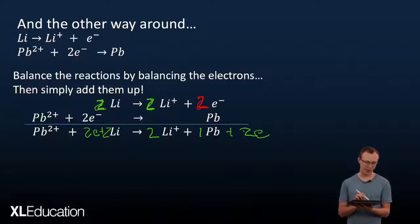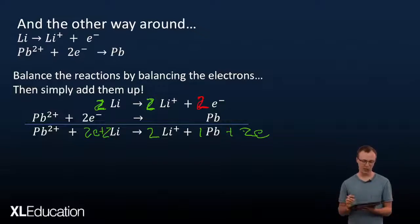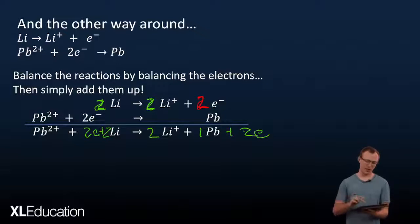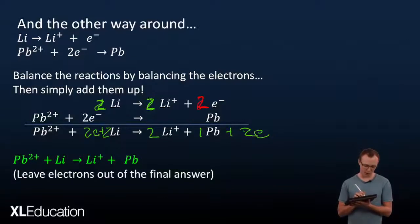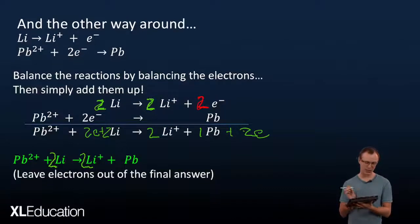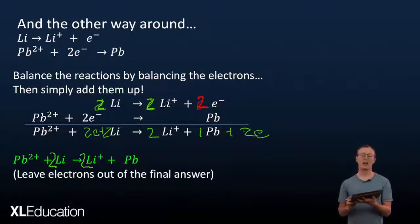The number of electrons on the left is the same as the number of electrons on the right. We then write that as the final equation, leaving out the electrons in our final answer. We had two lithium atoms and two lithium ions reacting with one lead ion and one lead atom.